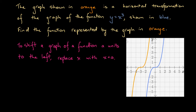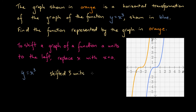Here we have y equals x to the power of 3, and it has been shifted. How many units to the left? It looks like 1, 2, 3 — all the points in orange are 3 units left of the corresponding points in blue. So the graph has been shifted 3 units to the left.